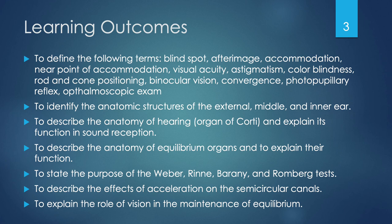To identify the anatomic structures of the external, middle, and inner ear. To describe the anatomy of hearing, including the organ of Corti, and to explain its function in sound reception. To describe the anatomy of equilibrium organs and to explain their function. To state the purpose of the Weber, Rinne, Barany, and Romberg tests. To describe the effects of acceleration on the semicircular canals. To explain the role of vision in the maintenance of equilibrium.